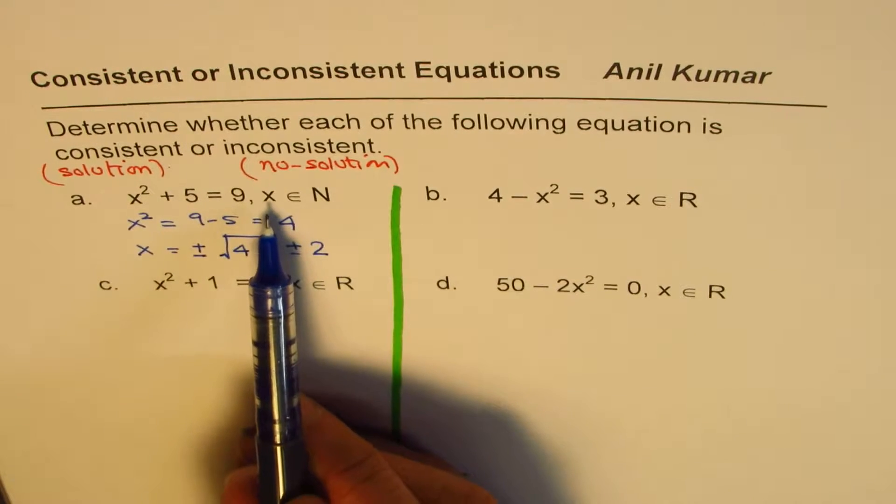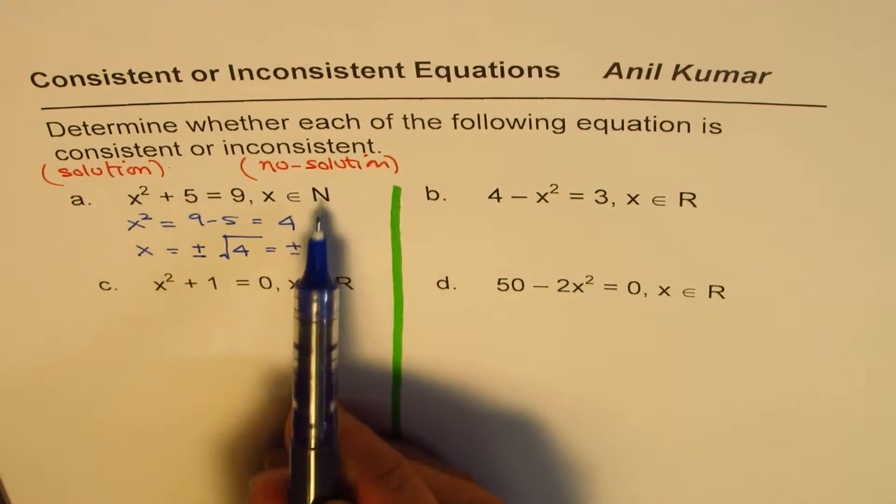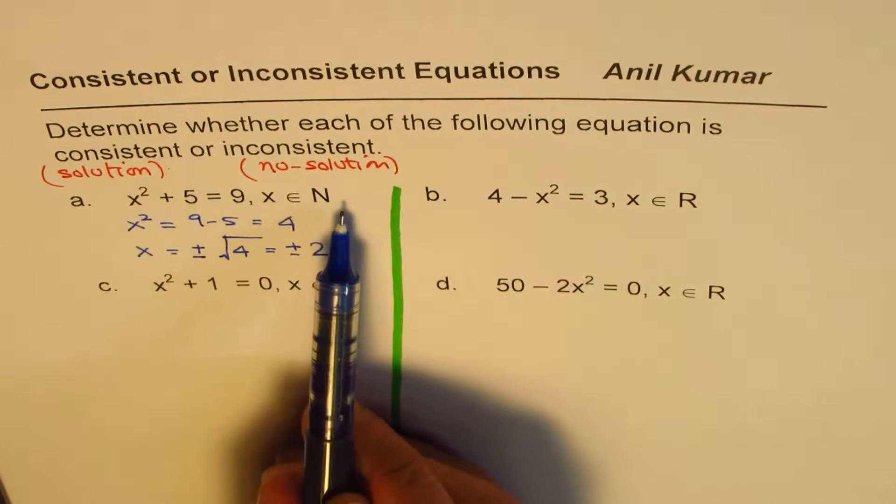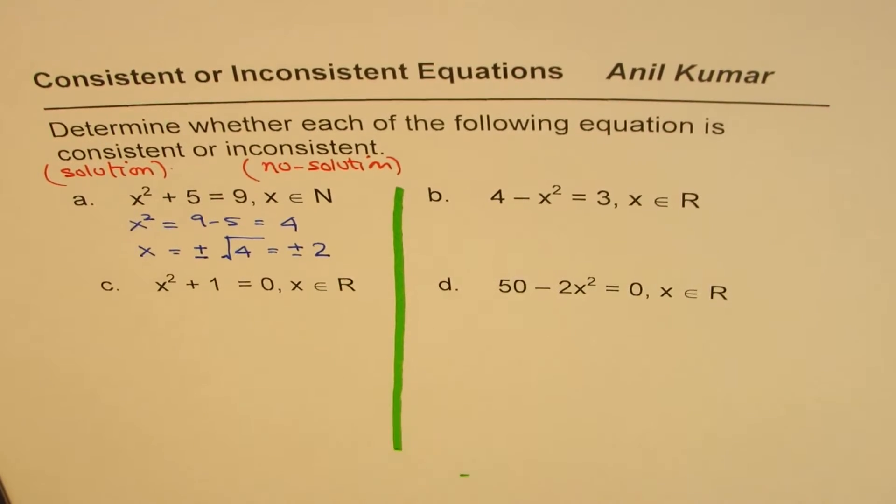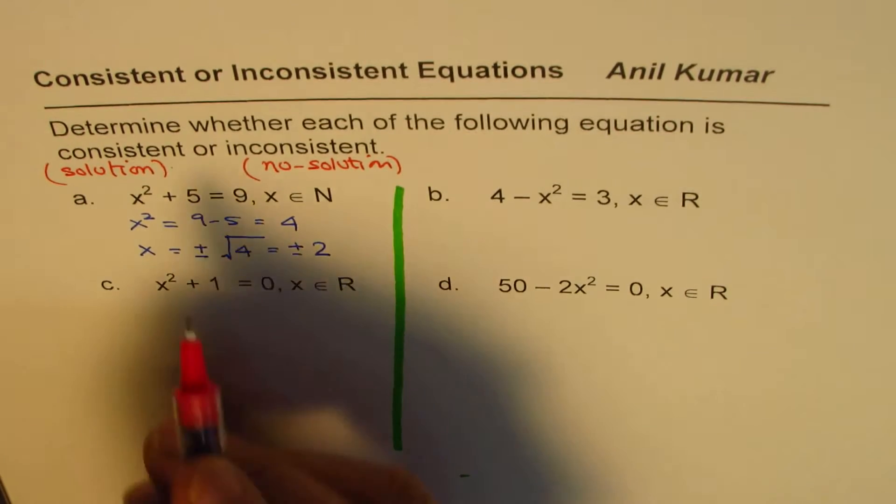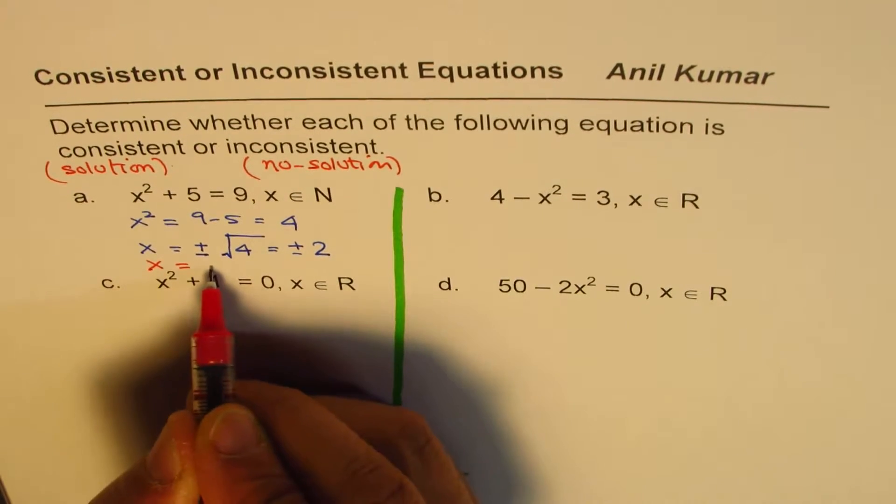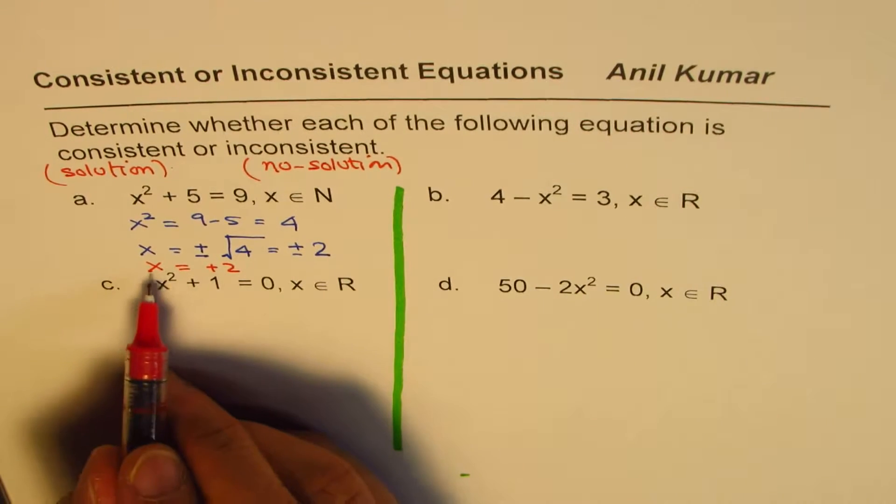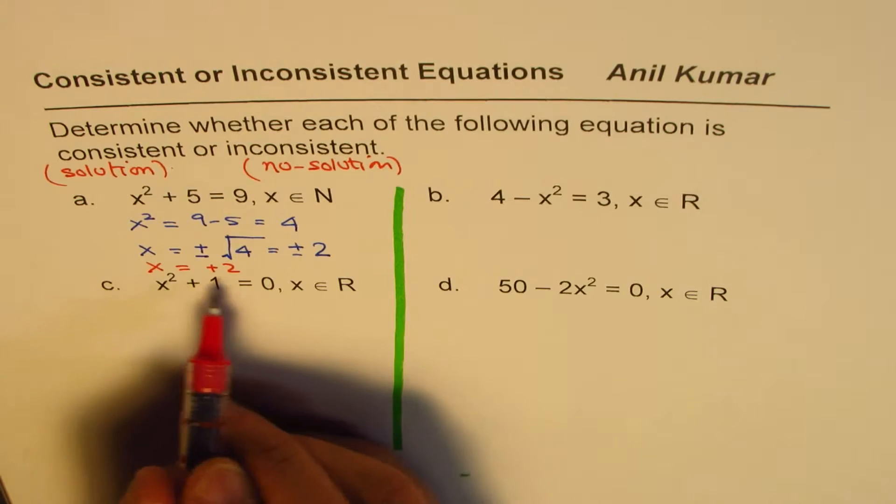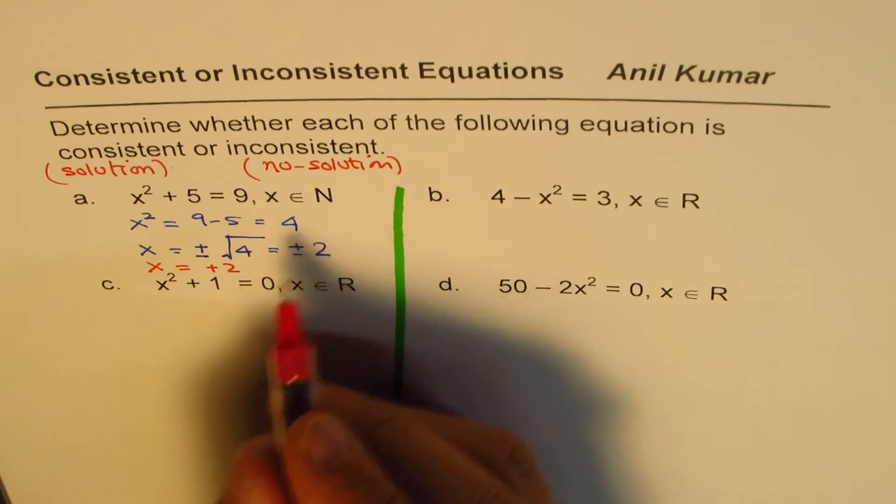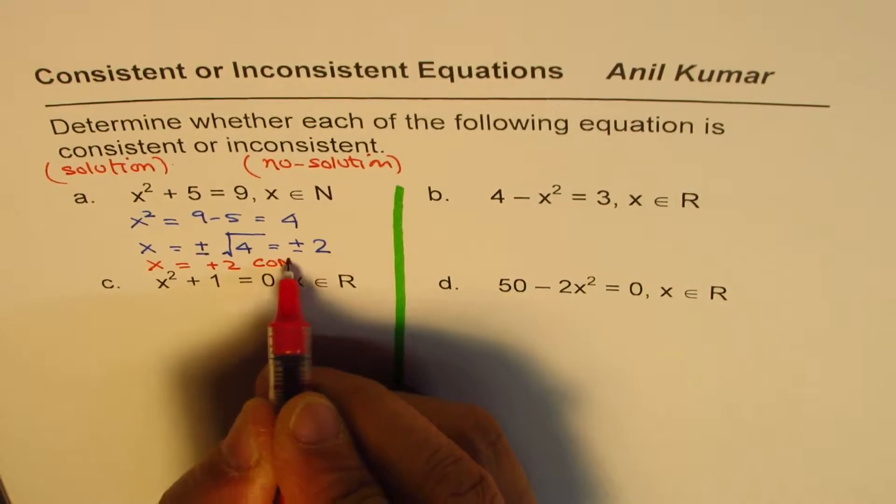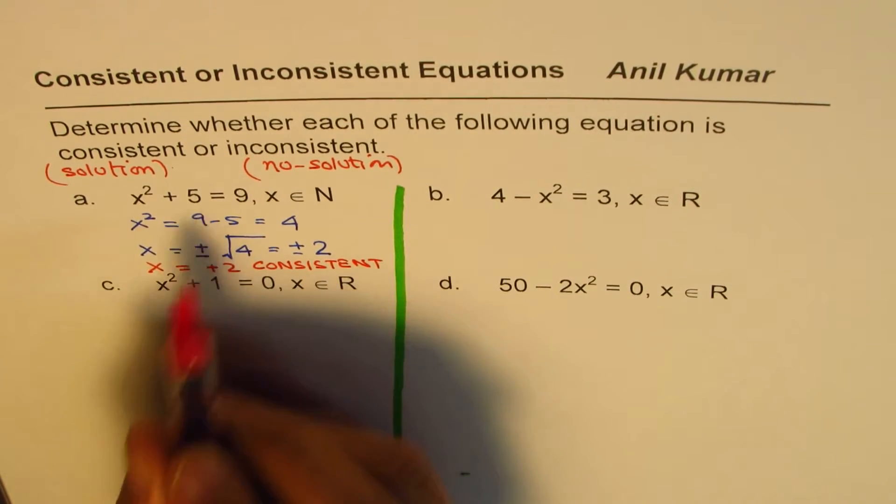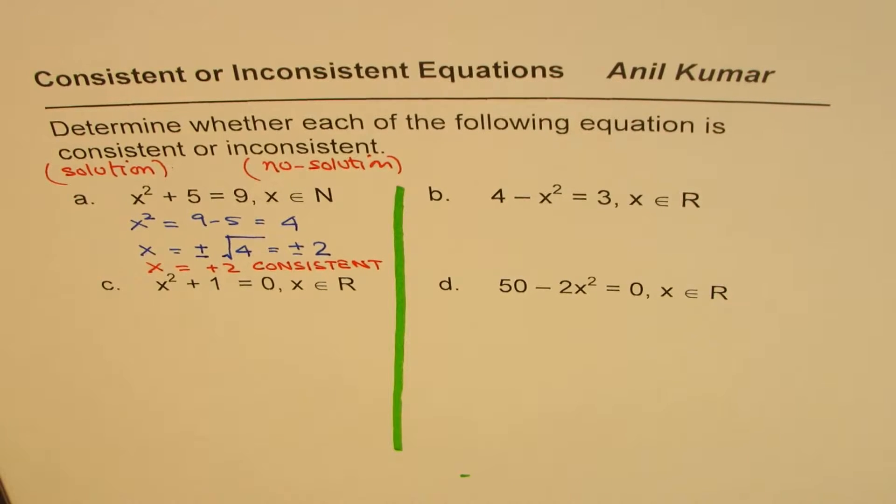If you look into this, x belongs to natural numbers. So natural numbers are positive numbers, 1, 2, 3, 4, and so on, not negative. So in the given domain, we have a solution, which is x equals to plus 2. Minus 2 is not in the domain. Since we have a solution, we'll call this as consistent. Any equation which has a solution will be treated as consistent.